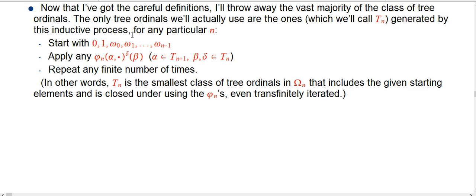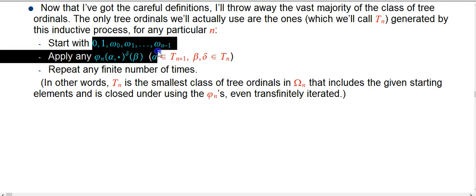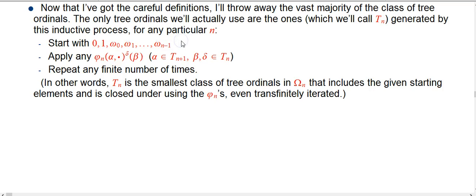It's pretty simple based on what we just had. Our starting ingredients for T_n at level n: we allow ourselves 0 and 1, and omega_0, omega_1, up through omega_{n-1}. So all the omegas and 0 and 1 that make sense at this level — that would exist in omega_n. We start with those, and now we apply phi sub n, the appropriate phi at this level, with any alpha that's in T_{n+1}.